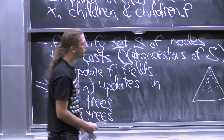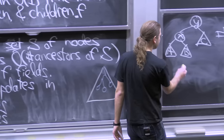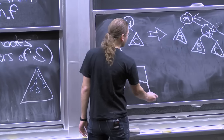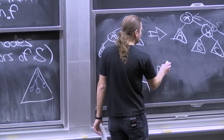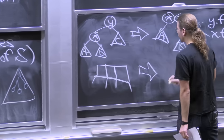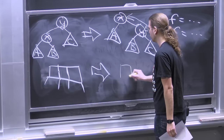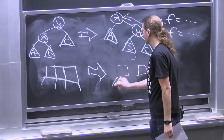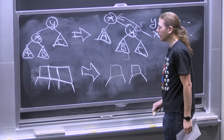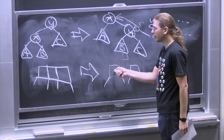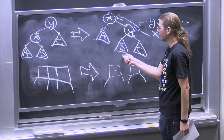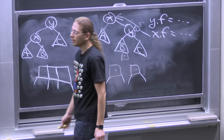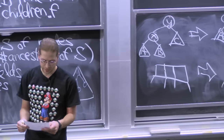Same thing with 2-3 trees. When a node splits — say we have three keys and four children, too many — we split into two nodes and push one up. We just trigger an update of the f values at those nodes. Because this follows a single path, everything is log n. This is a general theorem about augmentation: any function that's well-behaved in this sense can be maintained in AVL trees and 2-3 trees.